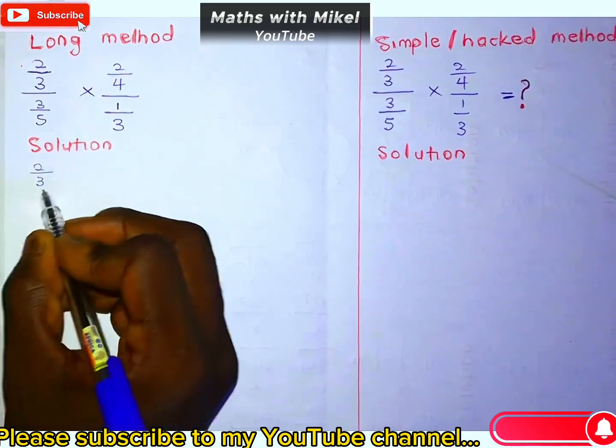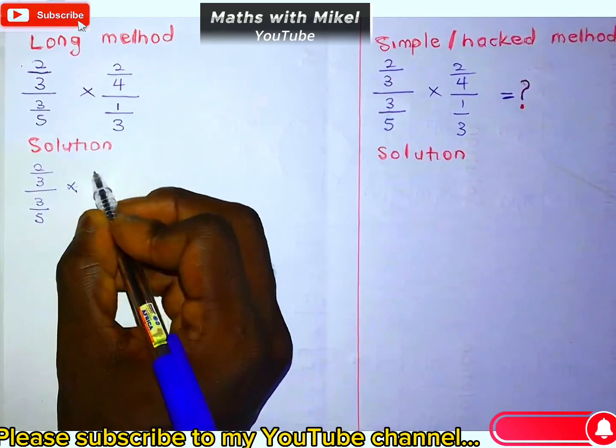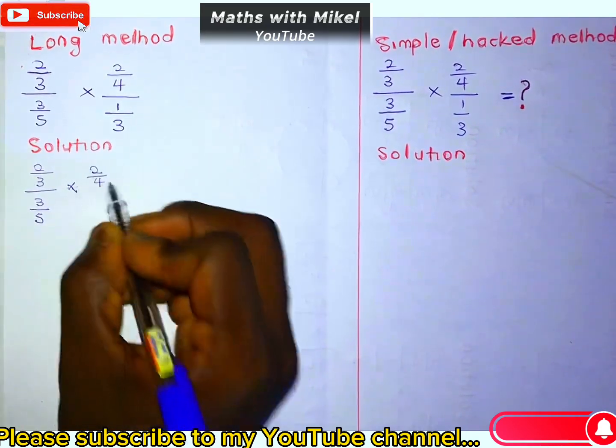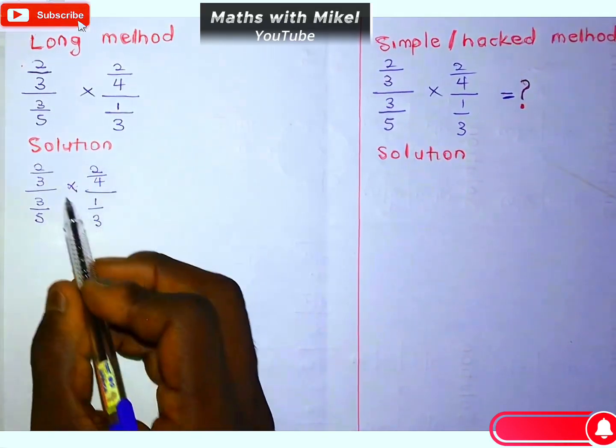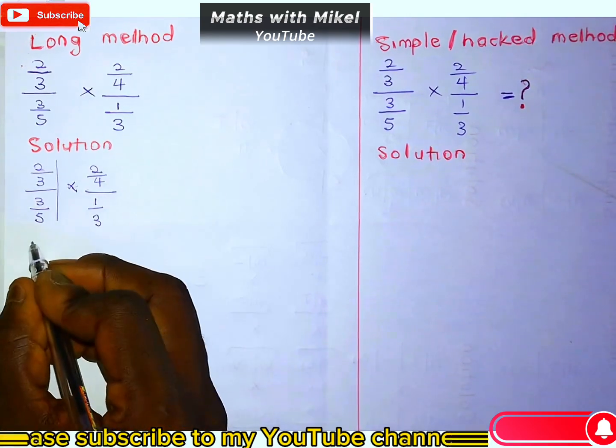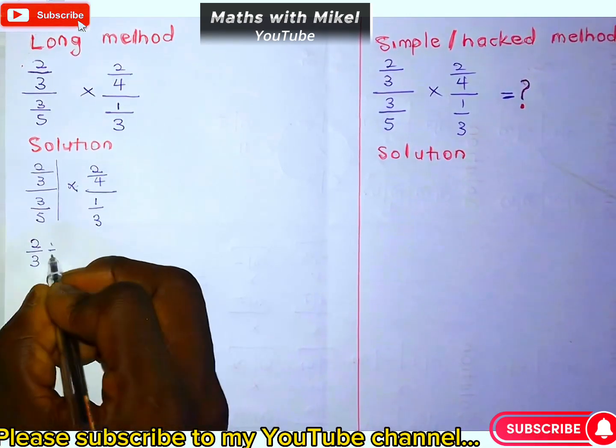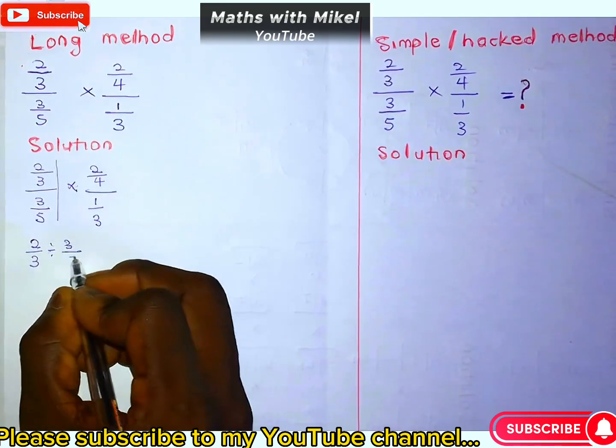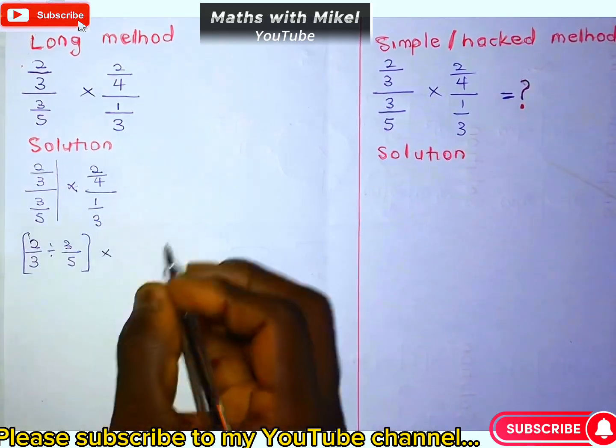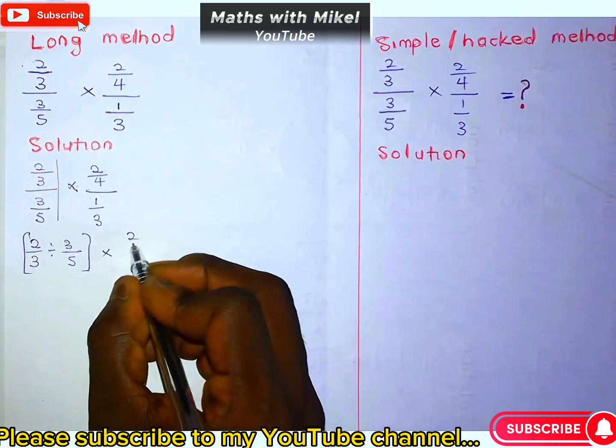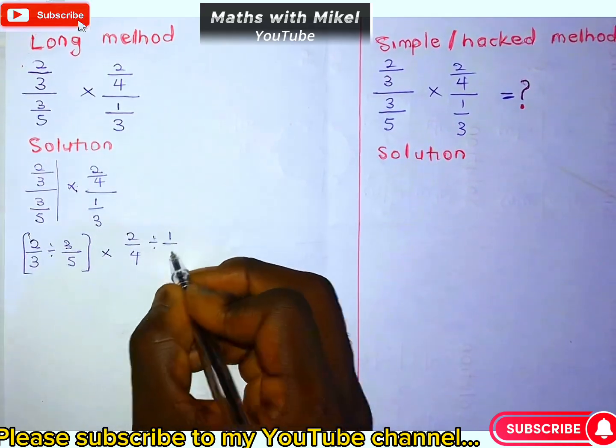The problem is 2 over 3 divided by 3 over 5, times 2 over 4 divided by 1 over 3. Now this can be written as 2 over 3 divided by 3 over 5, times 2 over 4 divided by 1 over 3.